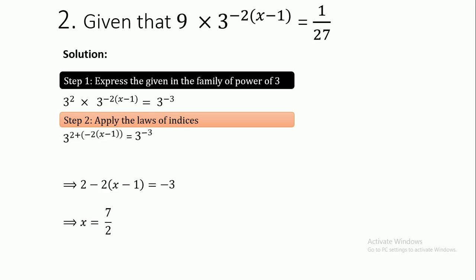From the first example, we know to cut out the equal bases. We are left with: 2 - 2(x-1) = -3. Opening the brackets: 2 - 2x + 2 = -3.